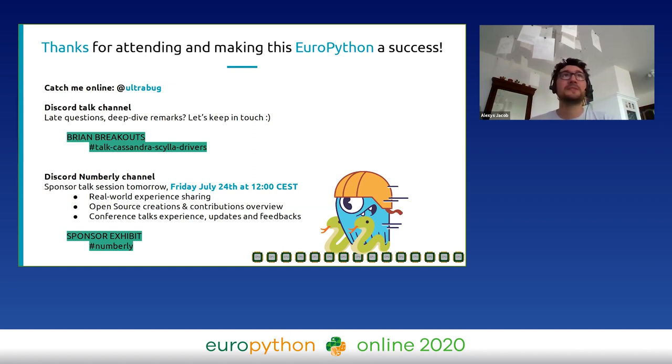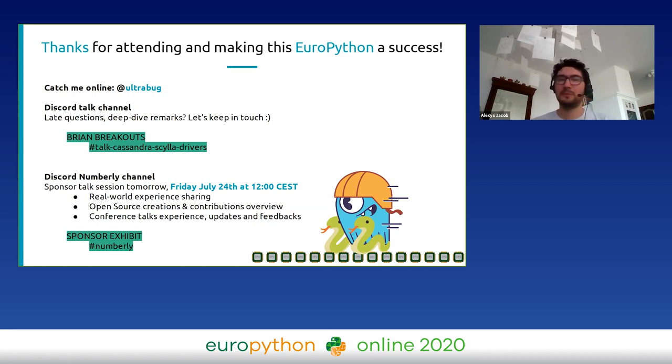Thank you for attending and making EuroPython a success. Discussion can continue in the Discord talk channel, and there is a sponsor talk session the next day. A Q&A question: the driver code appears Python 2 compatible — is there an asyncio part for Python 3.5+? Yes — the Cassandra driver is quite old and the fork inherited that. It still supports Python 2, and there are asyncio and libev connection classes available; the default is the asyncore one.